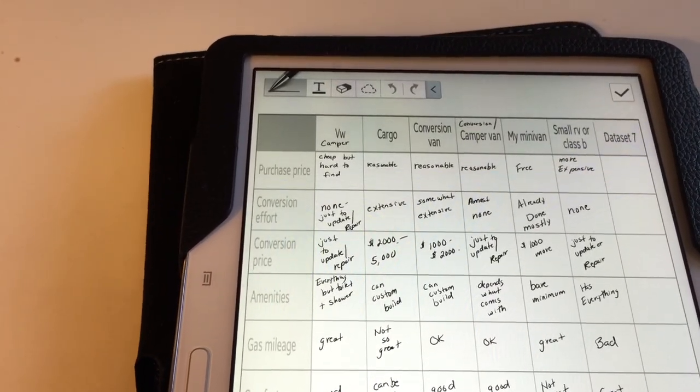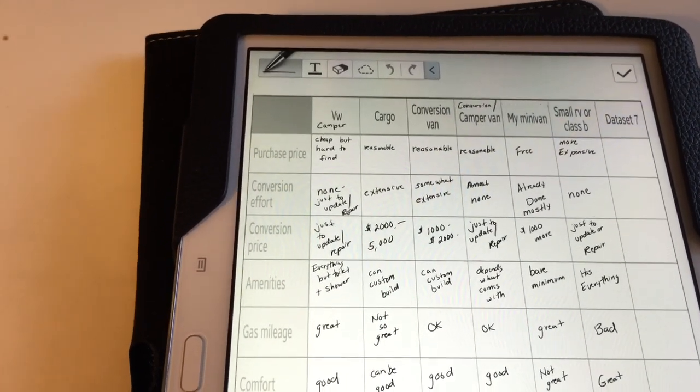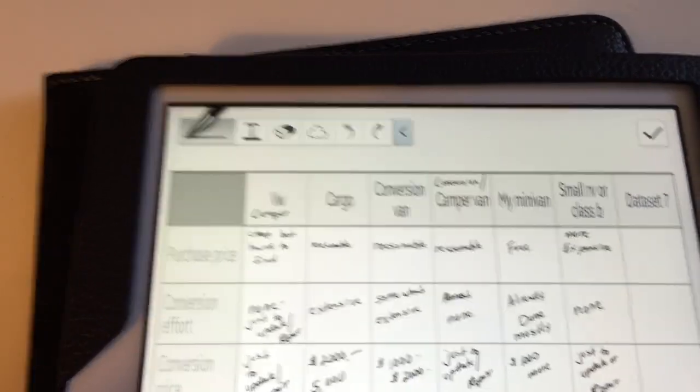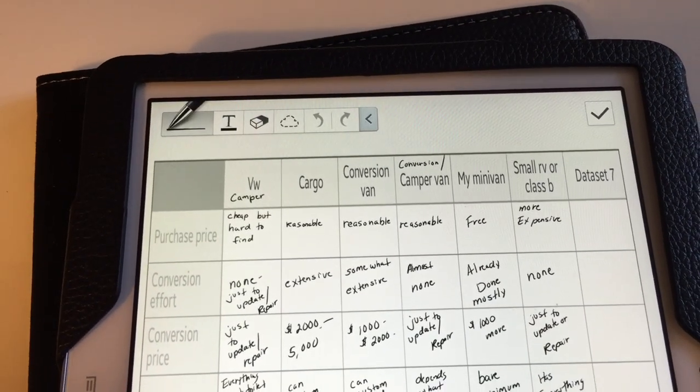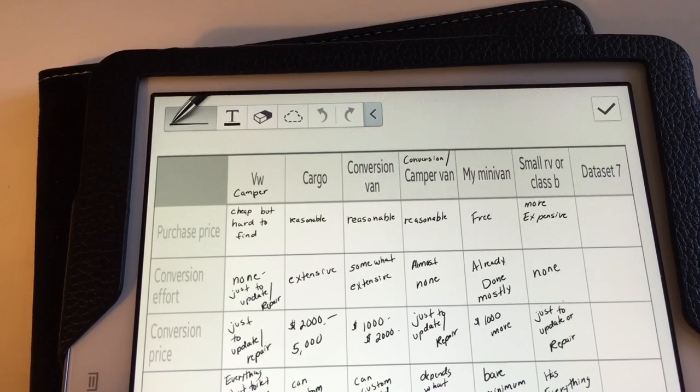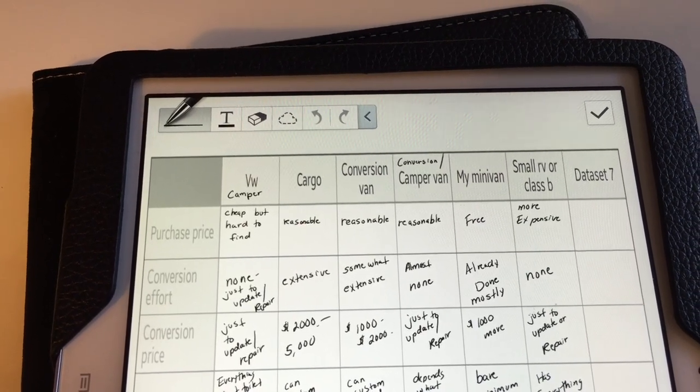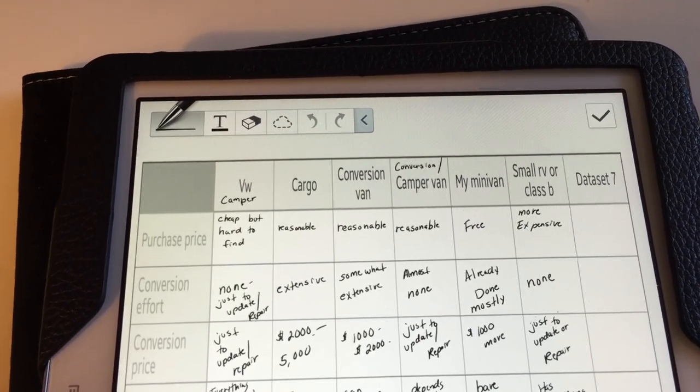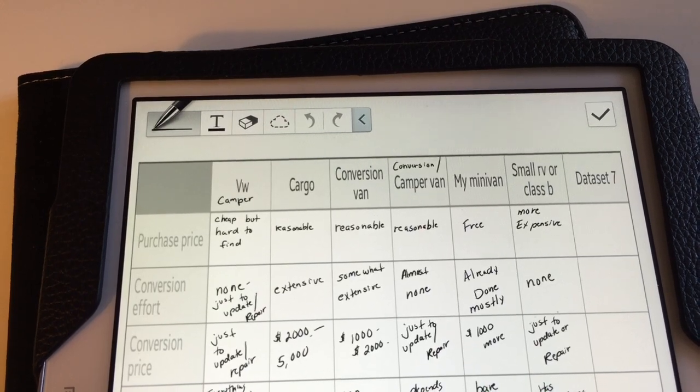When I was thinking about looking at other vehicles, I made this chart. Across the top of the chart I put Volkswagen, cargo van, conversion van, conversion camper van.